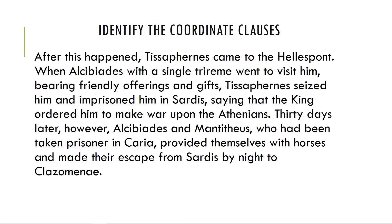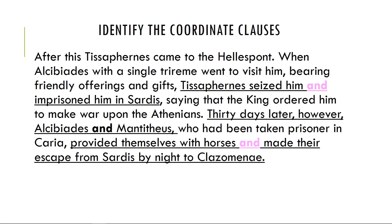Now, what in here represents coordinated verbs? 'Tissaphernes seized him and imprisoned him' — those are coordinated. 'Alcibiades and Menithius provided themselves with horses and made their escape from Sardis' — those are coordinated as well. There is a third 'and' here: 'Alcibiades and Menithius,' but that is not coordinating clauses — it's coordinating words, making a noun phrase. A phrase doesn't join two verbs, so it is not a coordinated clause.